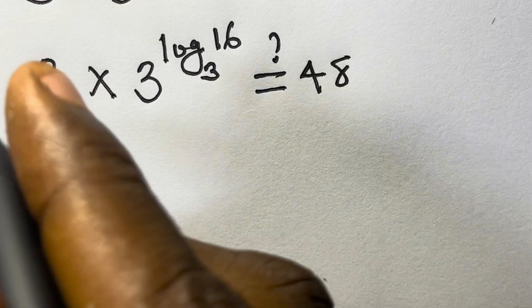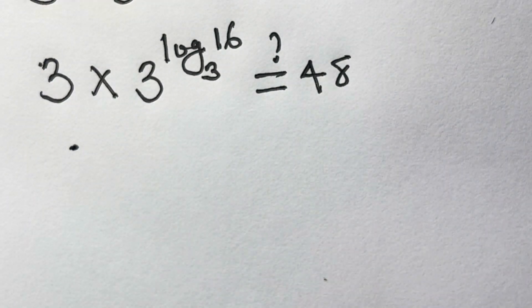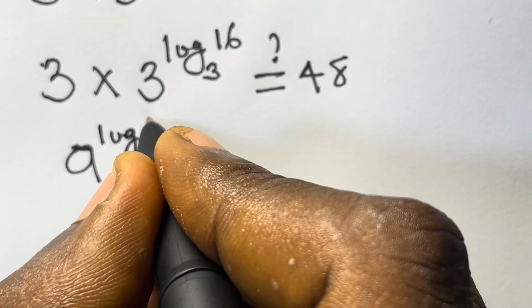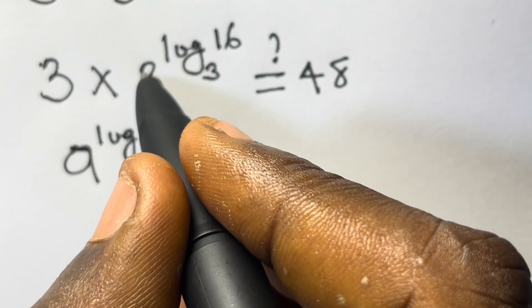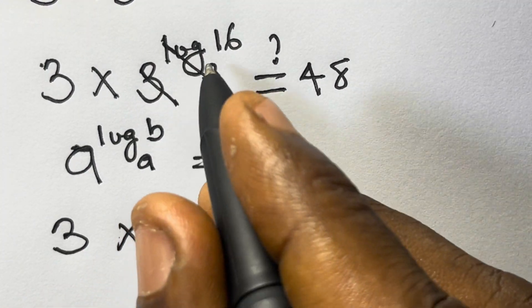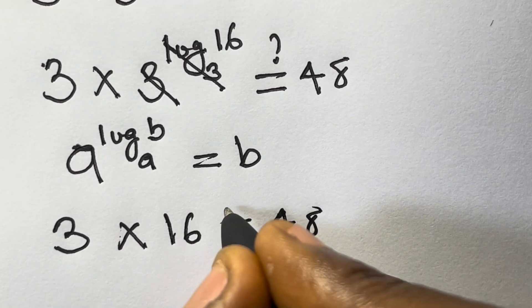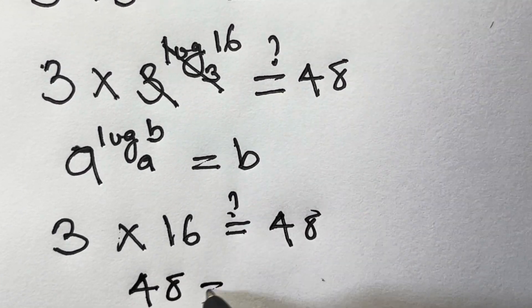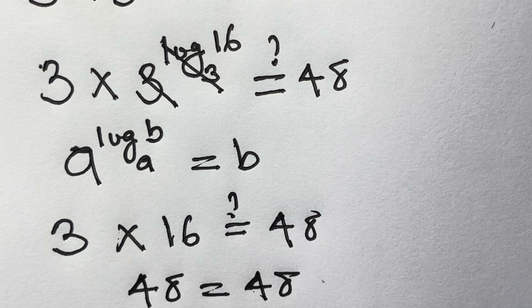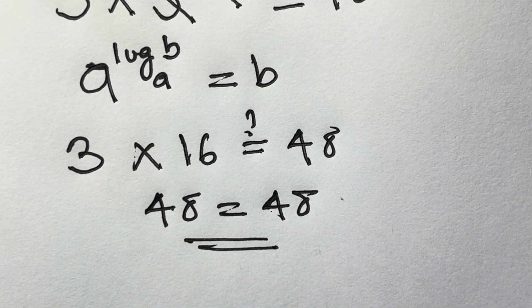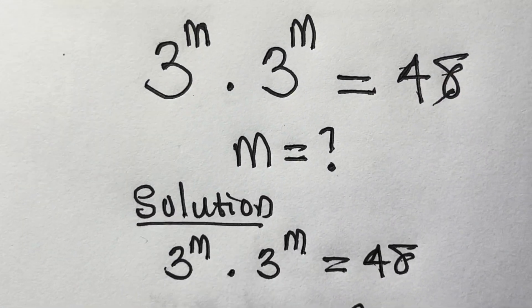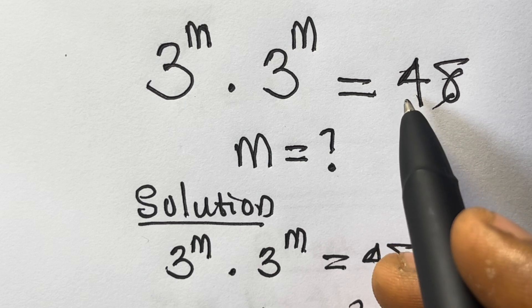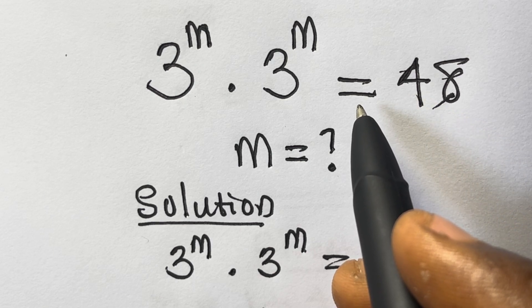From our law of logarithms, a raised to power log base a of x equals x. So 3 raised to power log base 3 of 16 equals 16. Therefore we have 3 times 16, which equals 48. This confirms that m equals 1 plus 4 log base 3 of 2, divided by 2, satisfies the equation 3 raised to power m times 3 raised to power m equals 48. Thank you for watching — please like, comment, share, and subscribe.